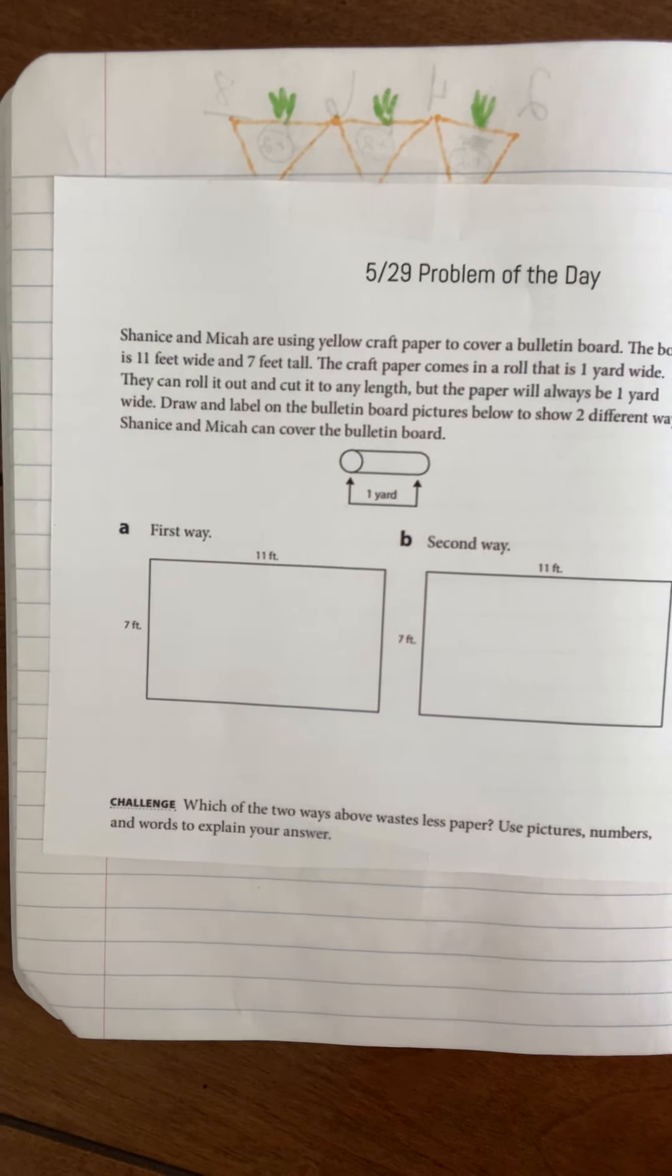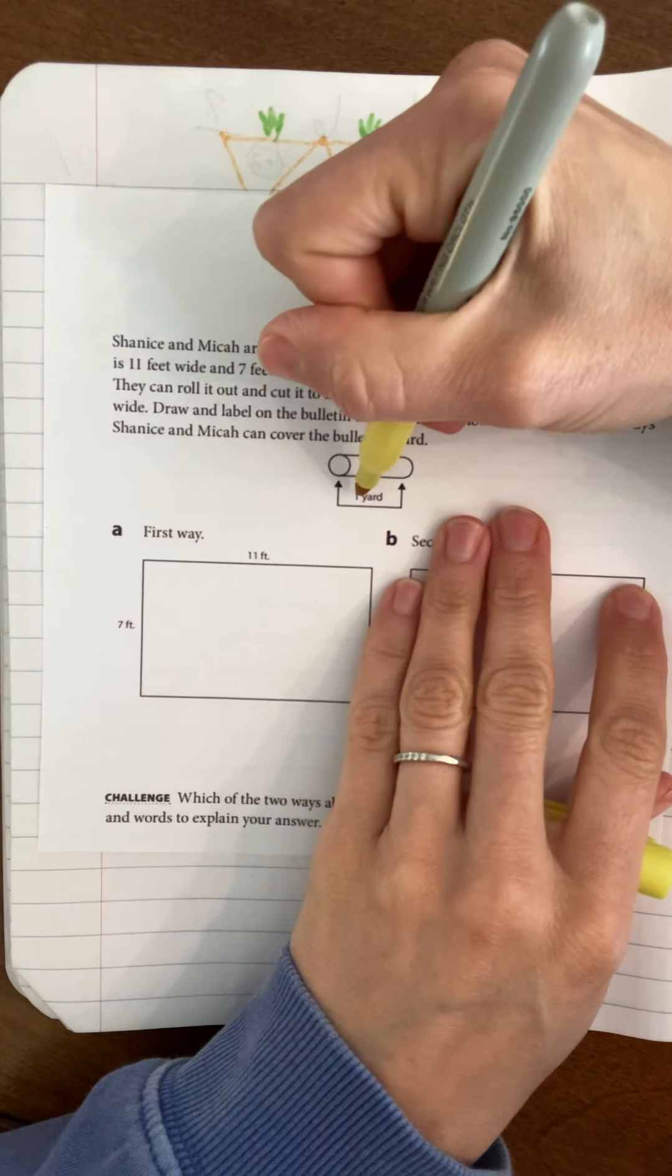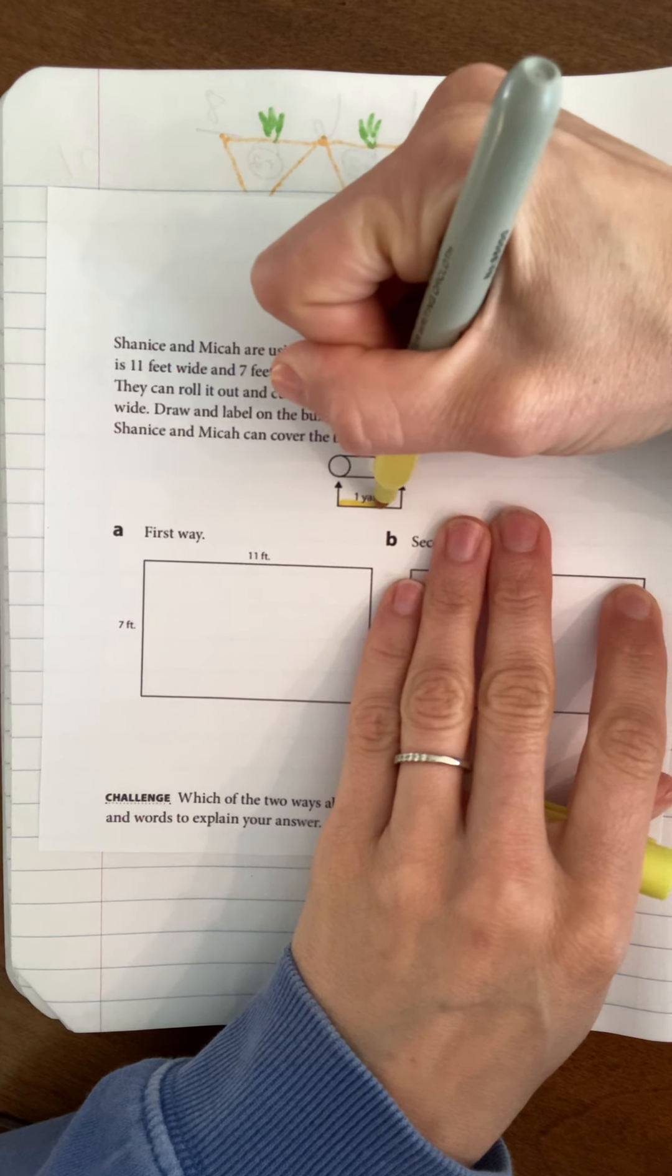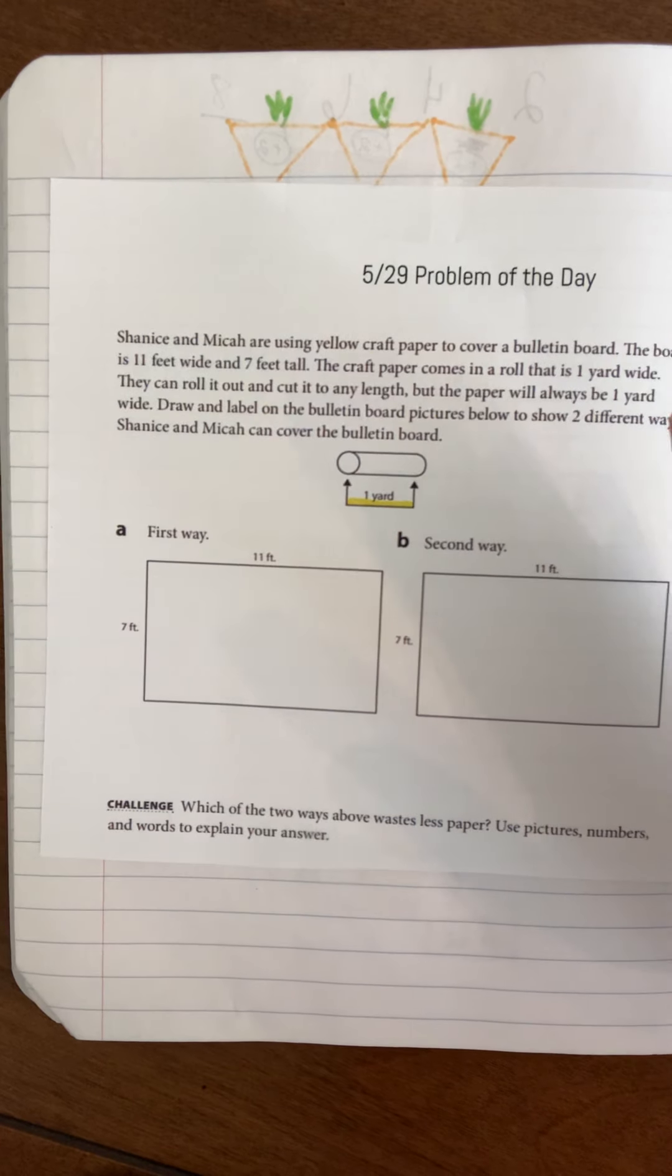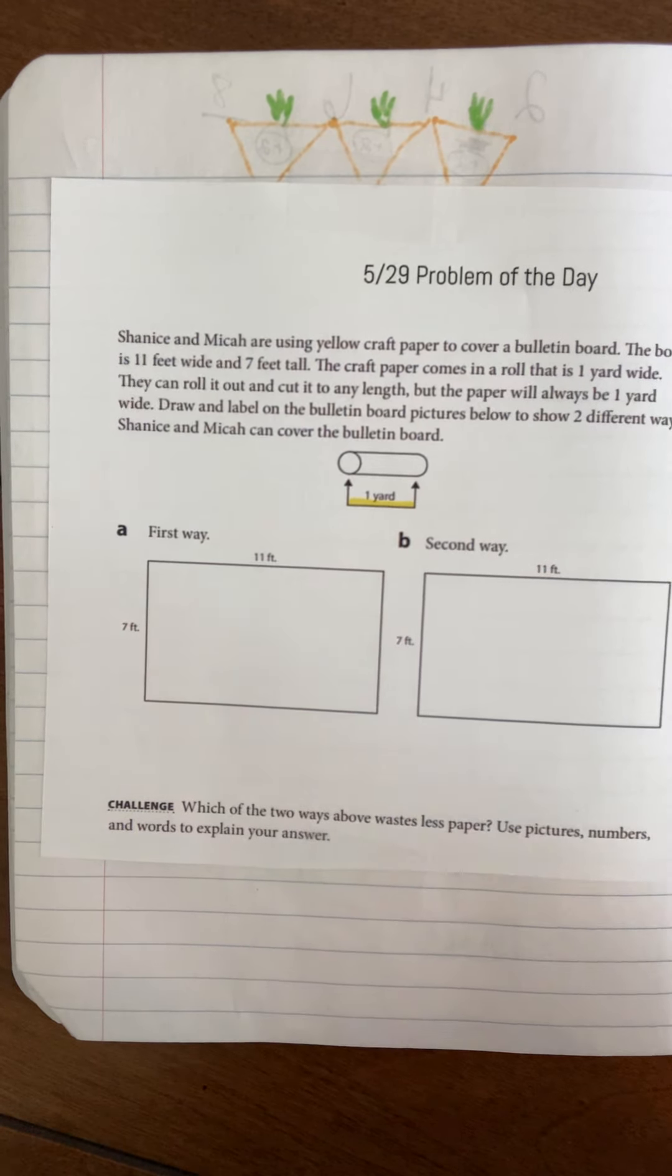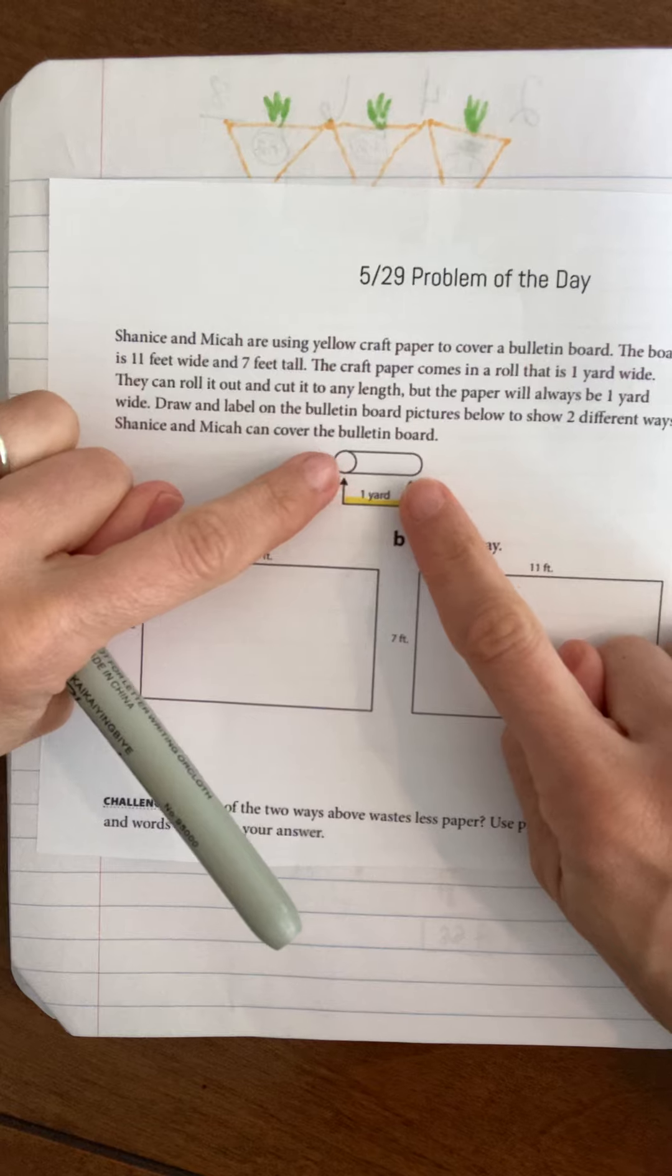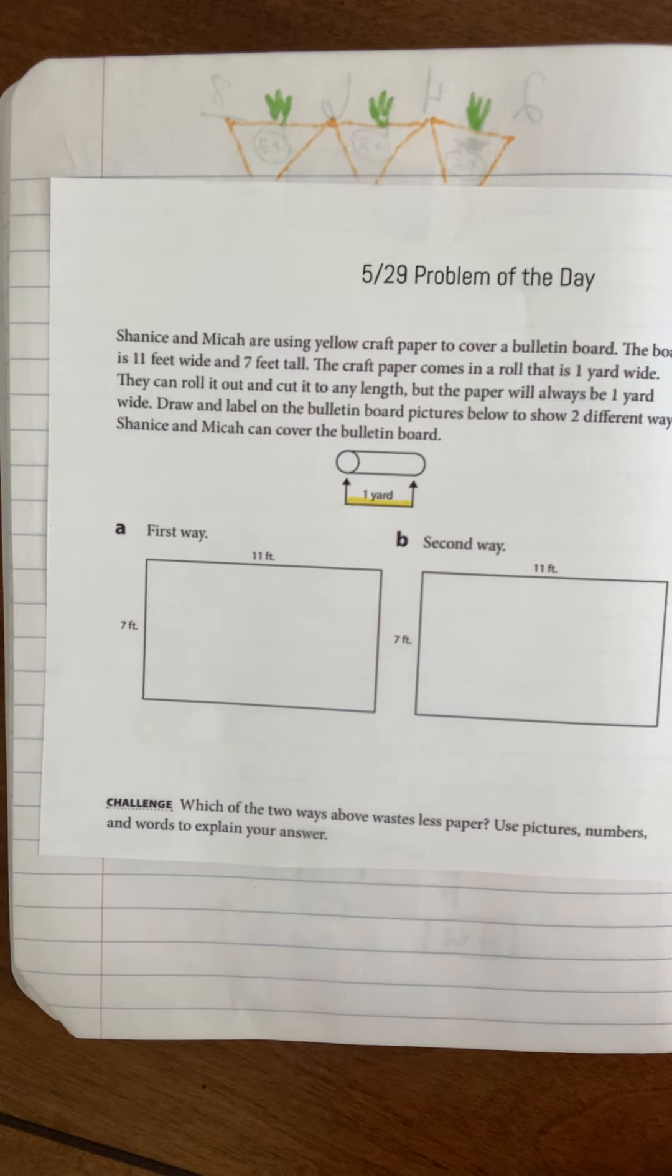This must be what the craft paper roll looks like - it's one yard wide and they said it's yellow. When they roll it out, they can cut it, but you have to think that it's one yard wide.